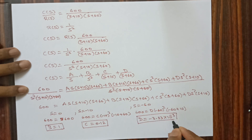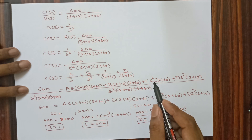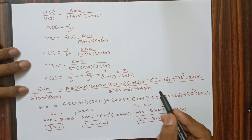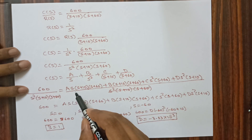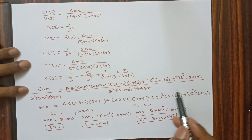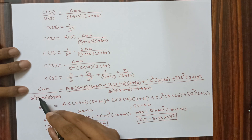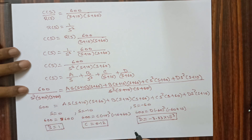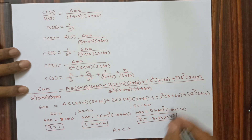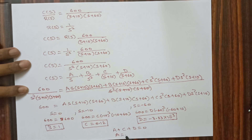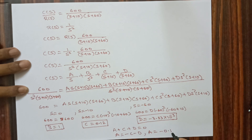For the final coefficient A, we compare the s² coefficients on both sides. The left hand side has no s² term, so we equate: A + C + D = 0. Therefore A = -C - D, and substituting the values of C and D gives A = -0.116.